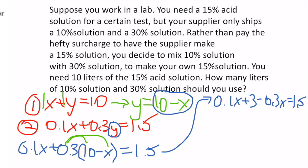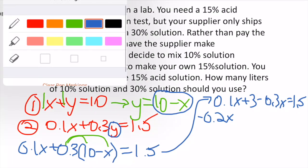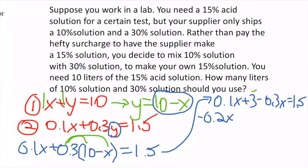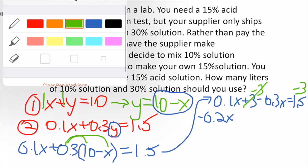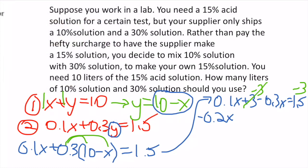Collecting like terms: 0.1x - 0.3x = -0.2x. Then on the numbers side: 1.5 - 3 = -1.5. So -0.2x = -1.5.